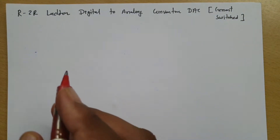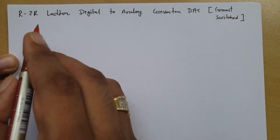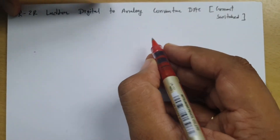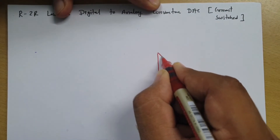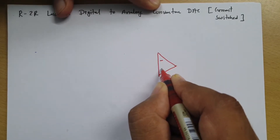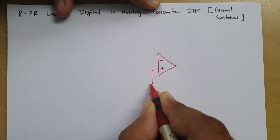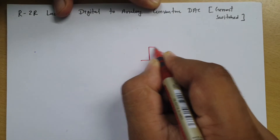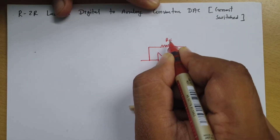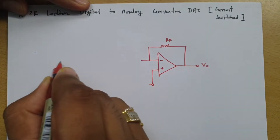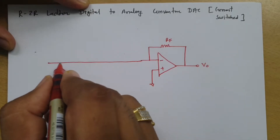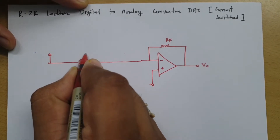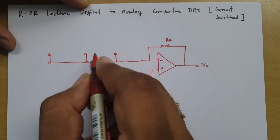Let me explain the basic circuit, and you will be identifying how this network is a bit different compared to a voltage switch network. To have this digital-to-analog converter, we will be using an operational amplifier. This is the inverting terminal and this is the non-inverting terminal. The non-inverting terminal is connected to ground. Here is the output voltage, and here we have the RF feedback resistor.